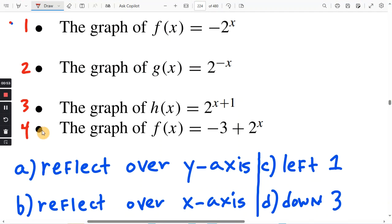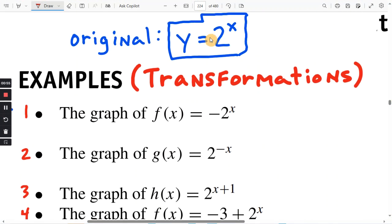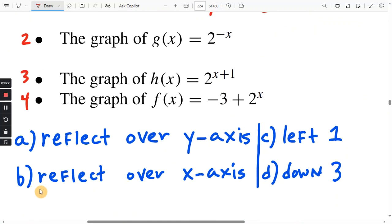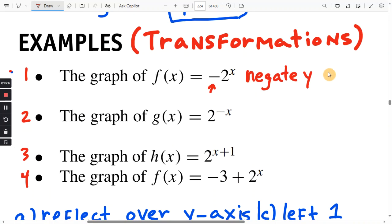All right, number one. We started with y equals 2 to the x, and we have a negative sign right there. So if we put a negative sign in front of this whole thing, that means that you negate y. You change the plus minus sign on y. When you negate the y or multiply the y times negative one, it reflects over the x-axis. It's the opposite, so that's going to be answer b.